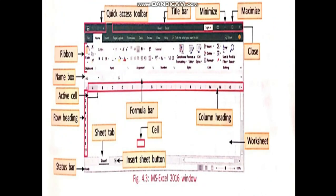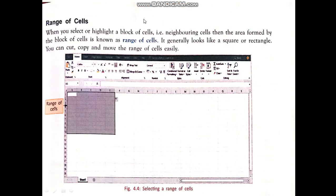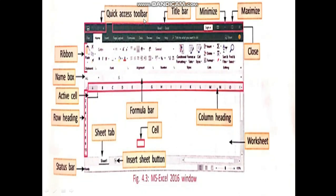This is the MS Excel 2016 window. In this window, you can see so many letters and words written here. One by one, we will see. These are all known as the components of the MS Excel window.